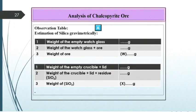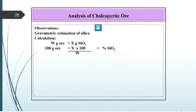Cool it well and take the weight of silica crucible plus lid plus residue. Record it in the observation table. Observation table for silica: weight of empty watch glass; weight of watch glass plus ore; weight of ore (W gram); weight of empty crucible plus lid; weight of crucible plus lid plus residue; difference of these two gives weight of silica (x gram). Calculation: W gram ore = x gram silica, so 100 gram ore = (x × 100) / W = percentage of silica.